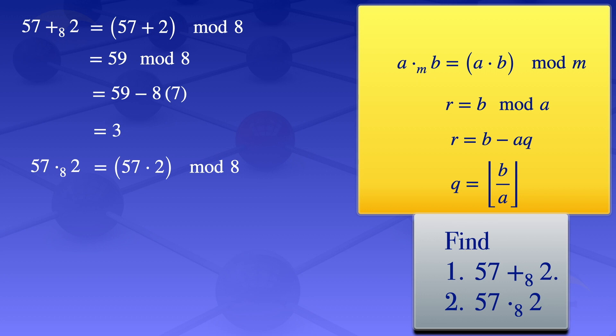57 times 2 gives us 114, so we have 114 mod 8. We're finding the remainder when 114 is divided by 8.